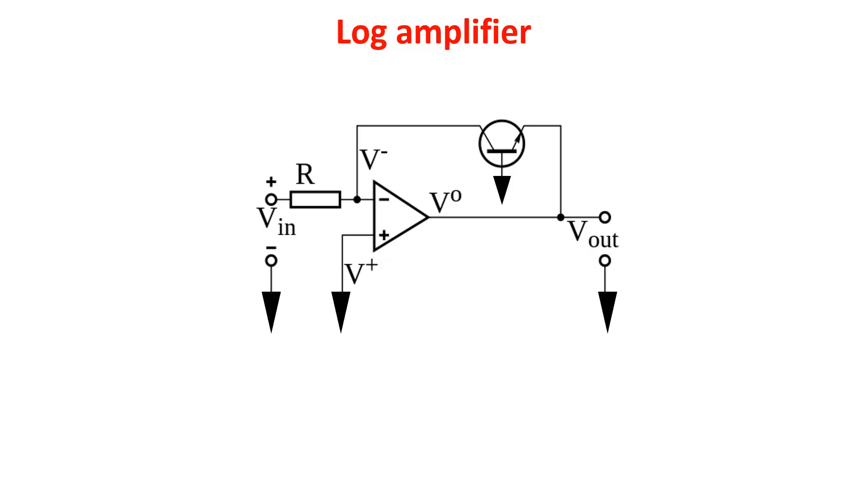That is because the base of the BJT is grounded and the collector has voltage V- which is equal to voltage V+, which in turn is grounded. If the op-amp works in linear region, the V- is equal to V+, which is one of the main properties of op-amps.